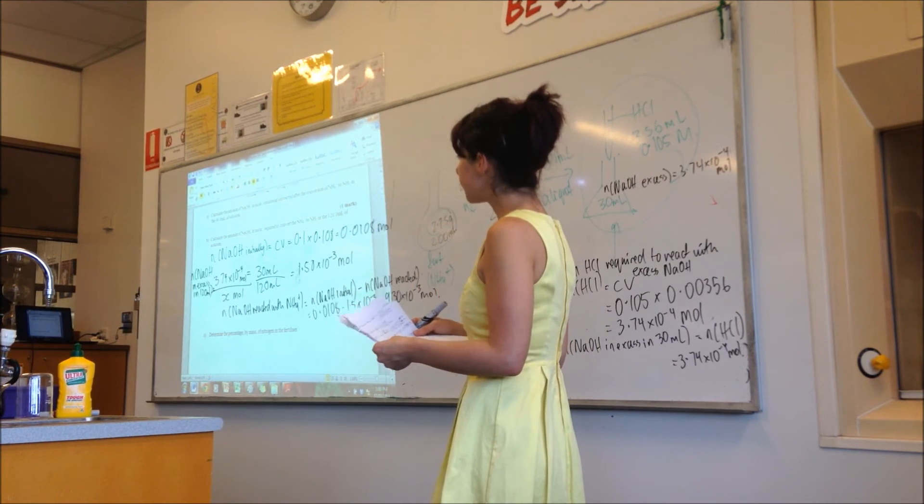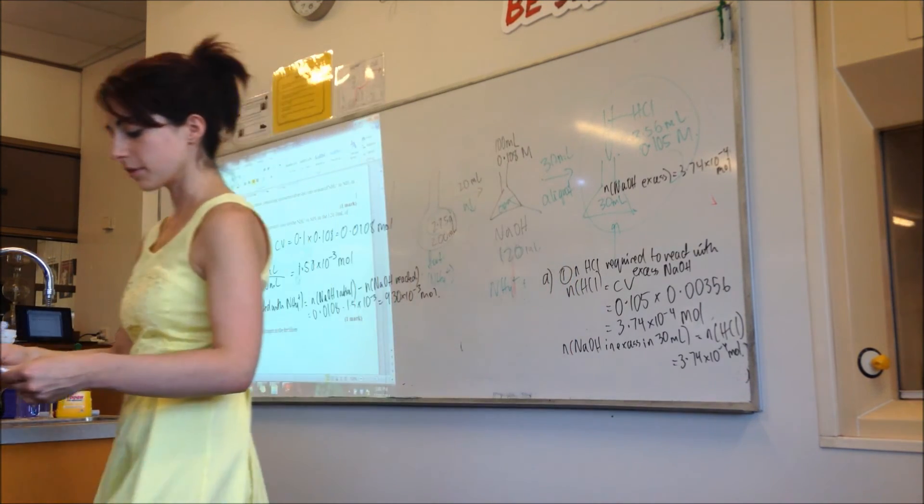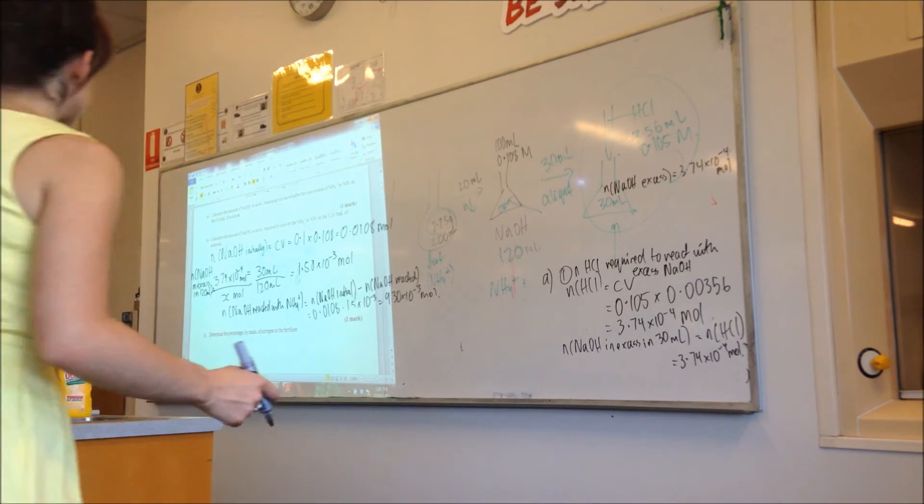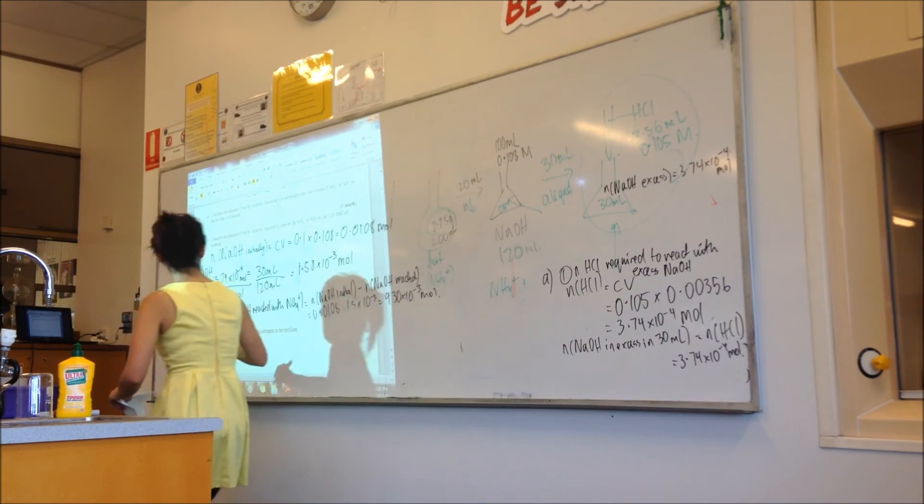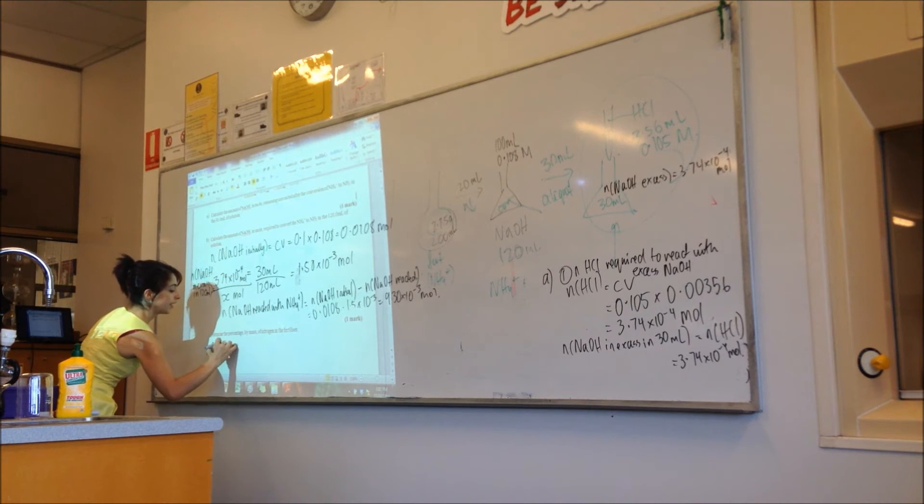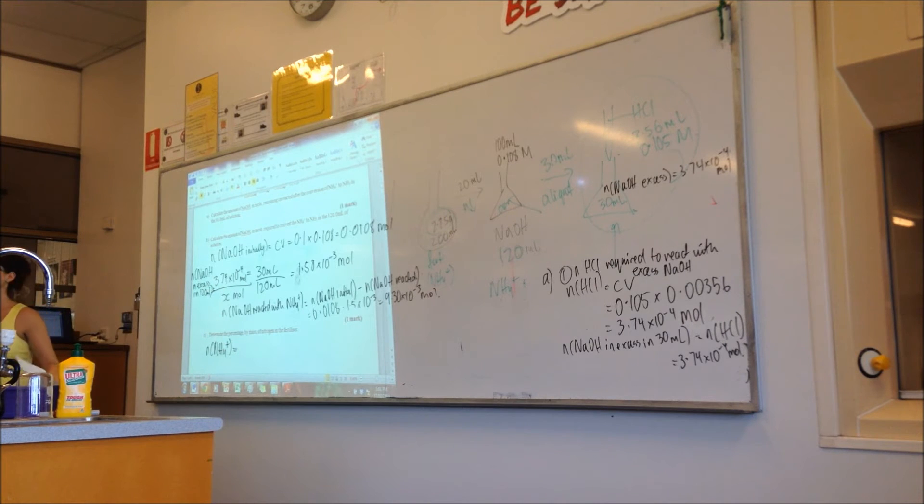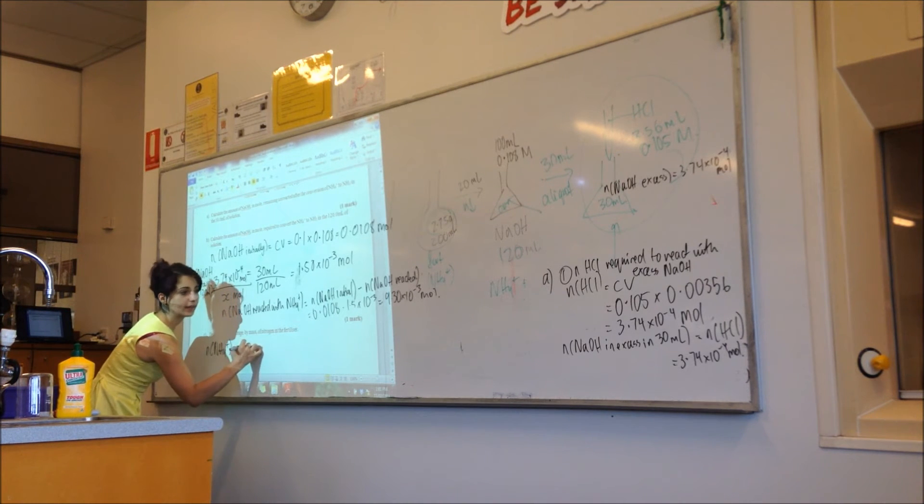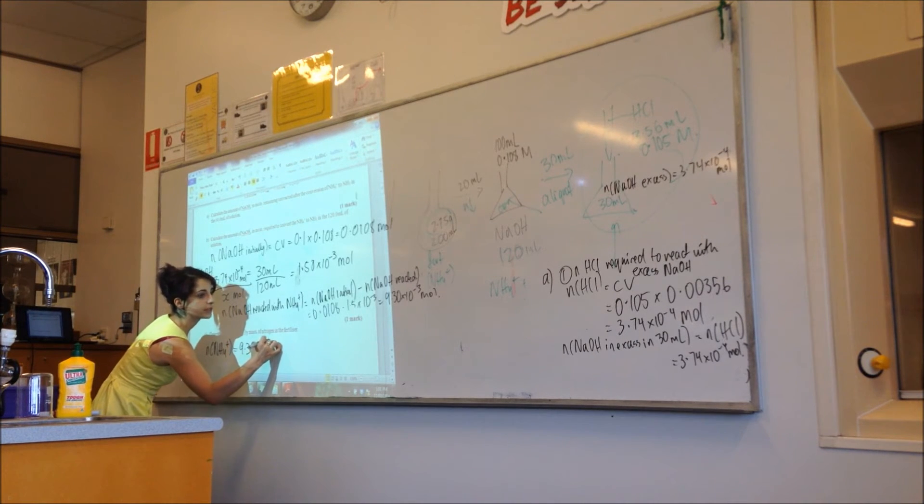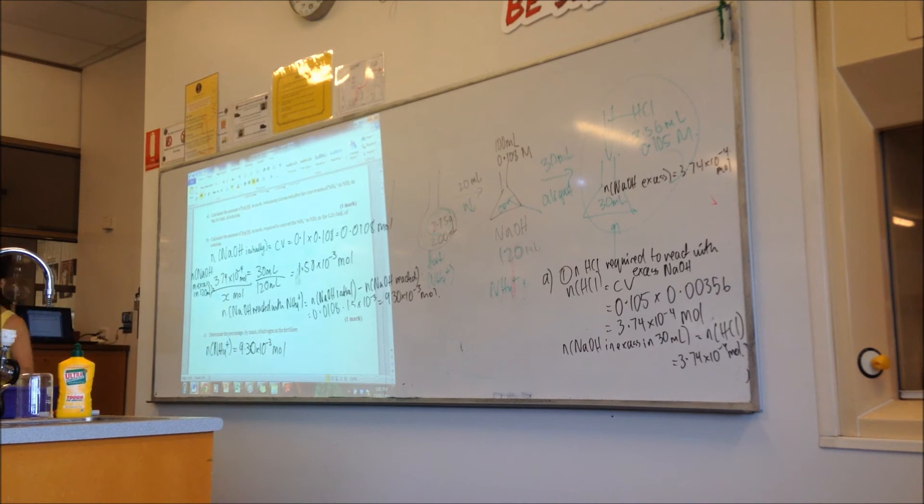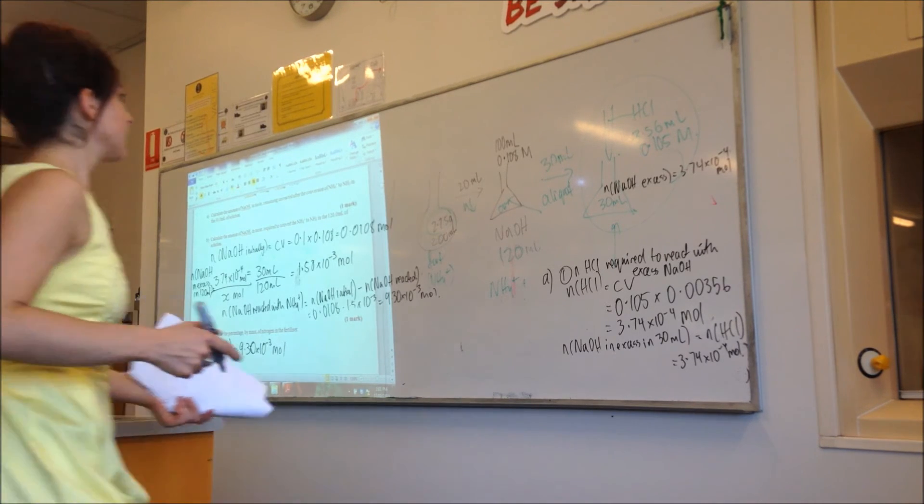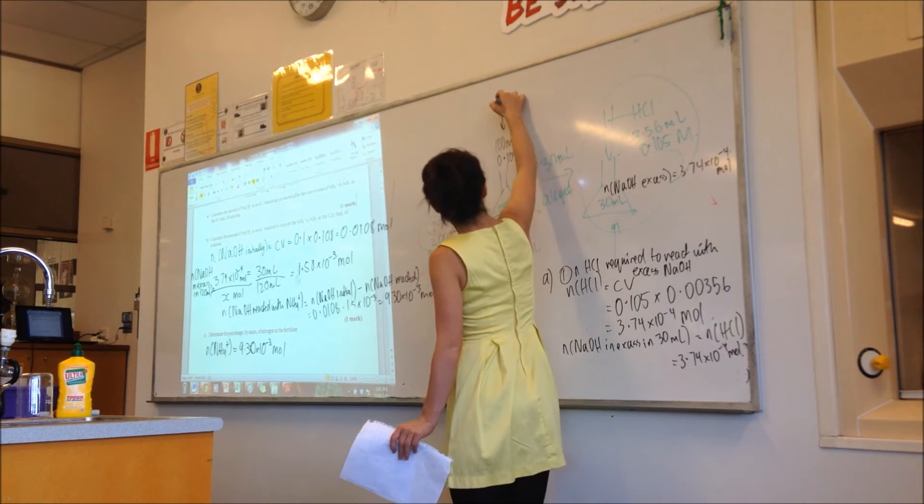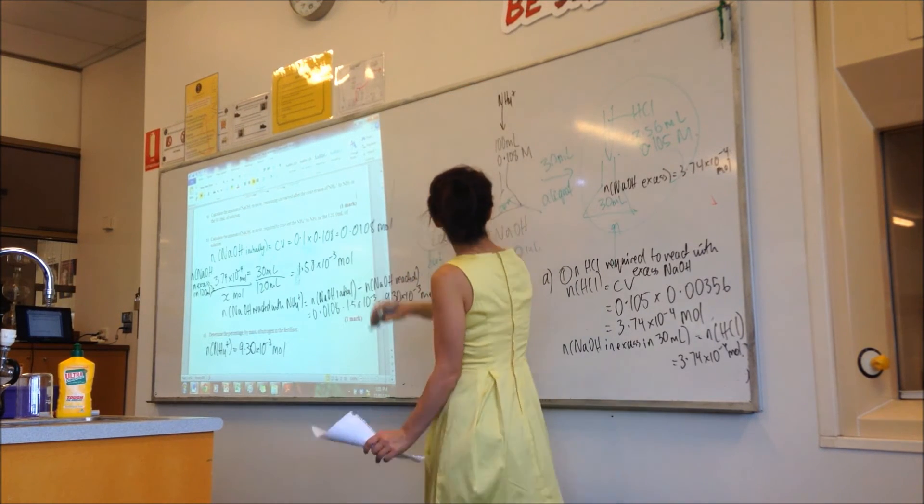Okay. Determine the percentage by mass of nitrogen in the fertilizer. This part's easy. What do we do? The moles of the NH4. The moles of the NH4. And what is it? It's the same as the... It's what we just worked out. So, equals 9.3 times 10 to the negative 3 mole. Then it says work out the amount, percentage by mass.